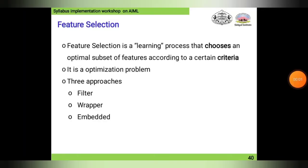In this new topic, I will be continuing principal component analysis — feature selection using PCA. Feature selection is a learning process that chooses an optimal subset of features according to certain criteria.